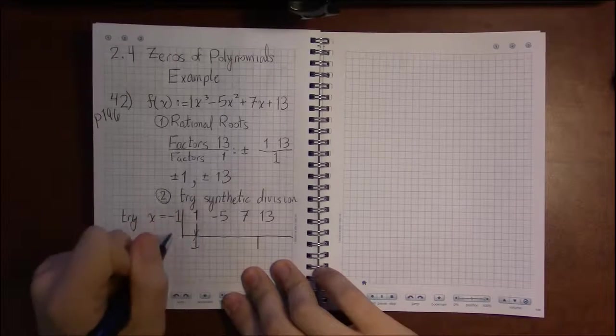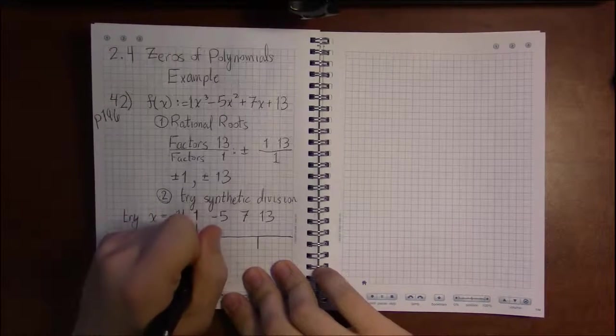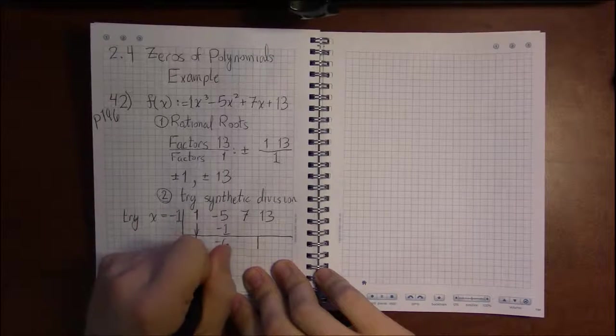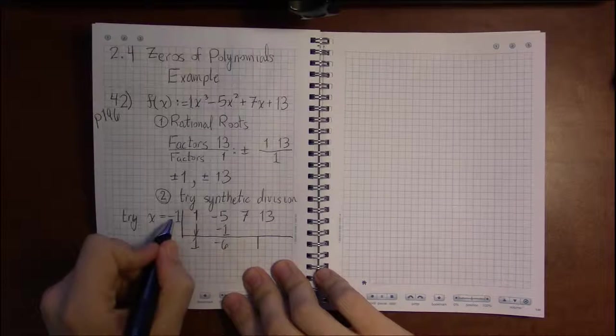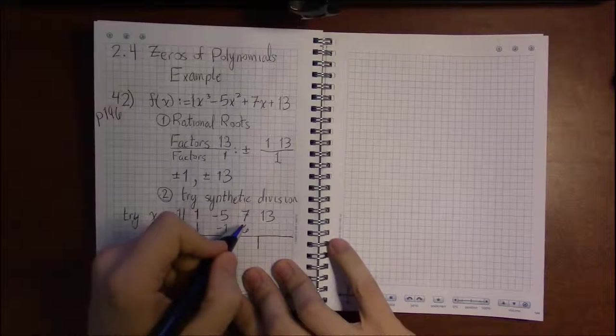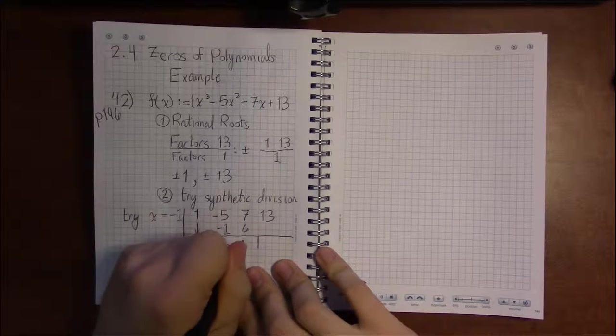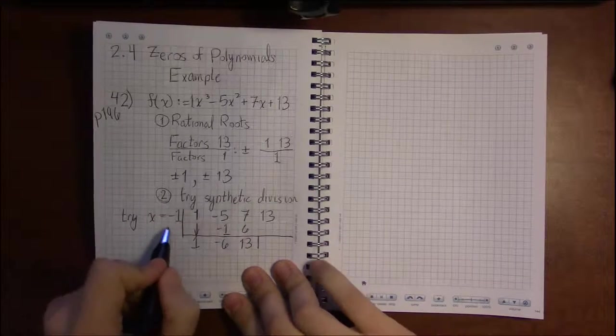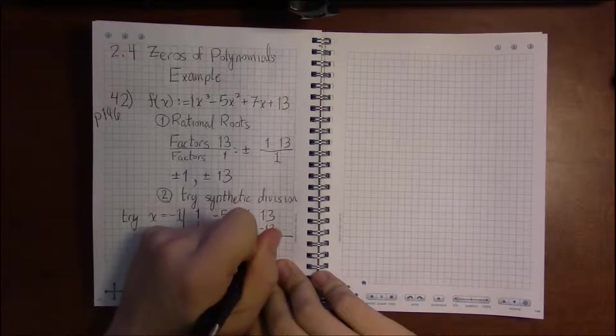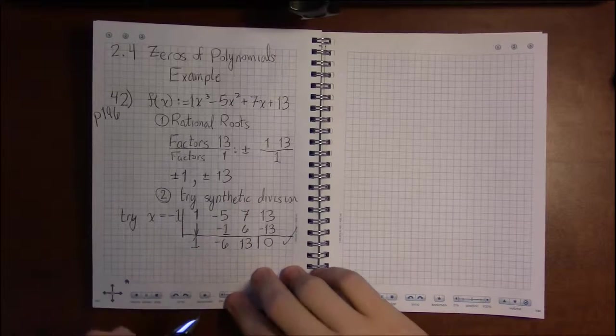Drop the 1. Multiply 1 by minus 1 to get minus 1. Add minus 5 with minus 1 to get minus 6. Multiply minus 1 times minus 6 and I get 6. 7 plus 6 is 13. This is looking good. Minus 1 times 13 is minus 13. And when I add, I get 0. Good.